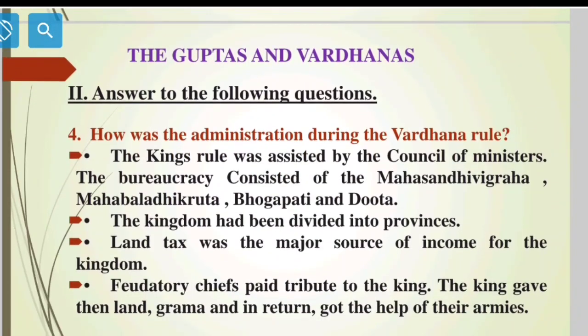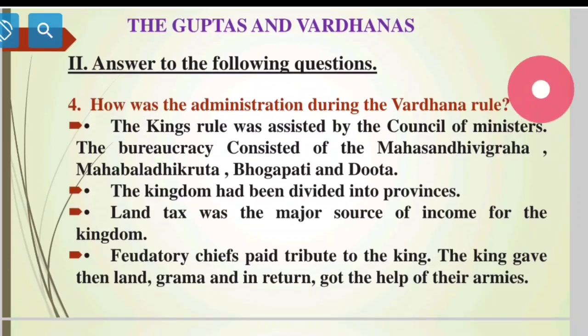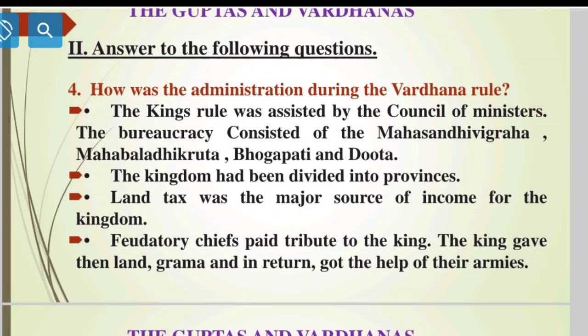How was the administration during the Vardhana rule? The king's rule was assisted by the council of ministers. The bureaucracy consisted of the Mahasandhi Vigraha, Mahabala Dhikrita, Bhogapati, and Dhuuta. The kingdom was divided into provinces. Land tax was the major source of income. Feudatory chiefs paid tribute to the king, and the king gave them land and grants, getting the help of their armies in return.